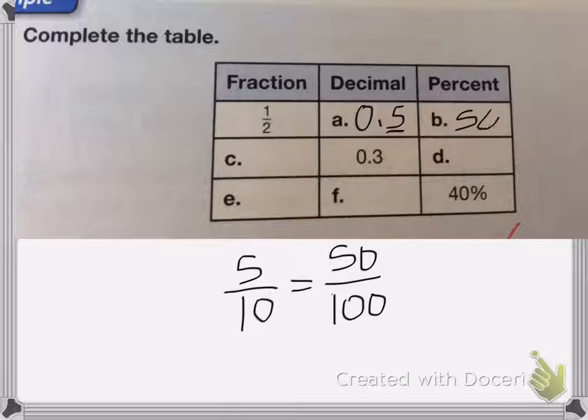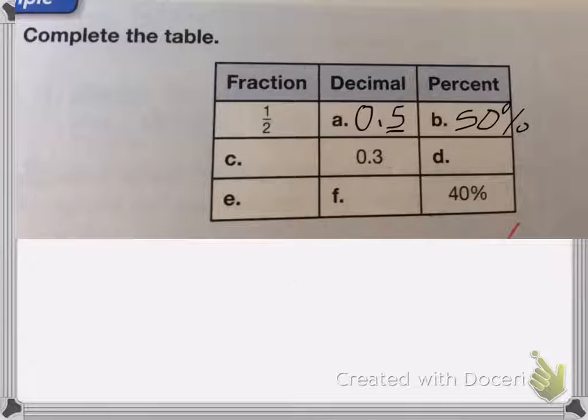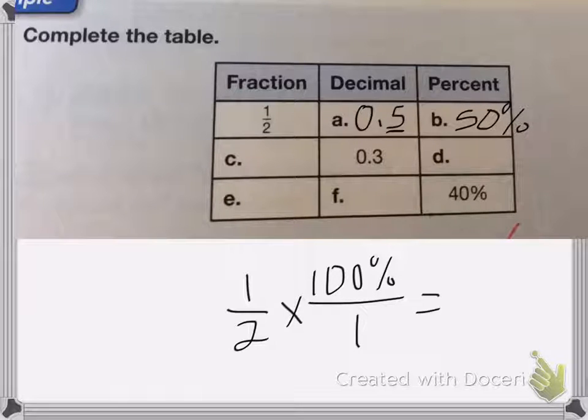So it's going to be 50 over 100. So it's going to be 50%. The other way to look at that is you can say one half times by 100%. The 100 and 2 cancel, 2 becomes a 1, 100 becomes a 50%. Same either way.